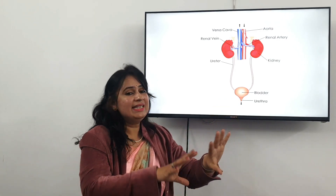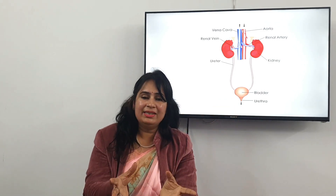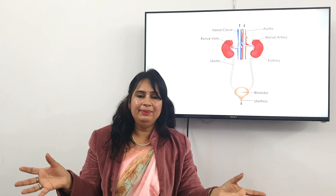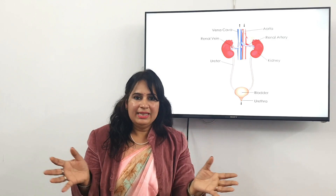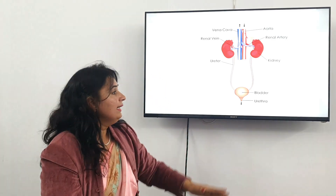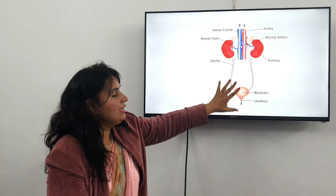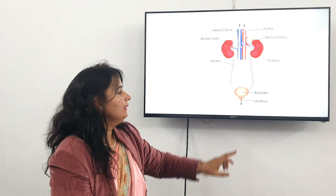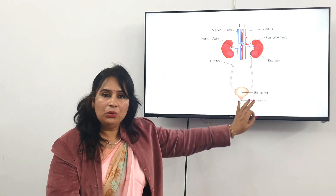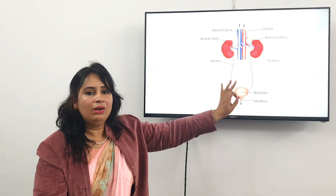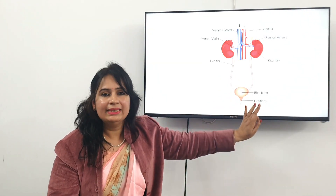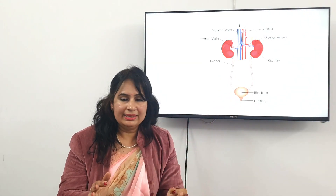The bladder is a sac-like structure. It holds the urine for some time as it is capable of holding it. Then the urine is thrown out of the body through the urethra, which is the opening of the excretory system through which urine is released.